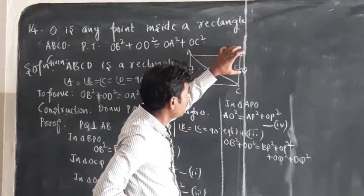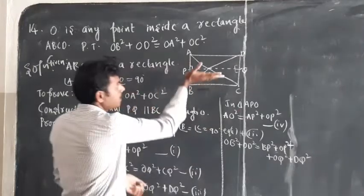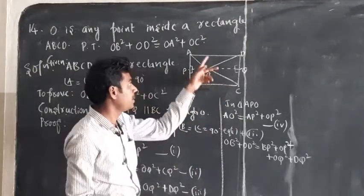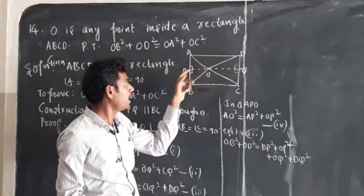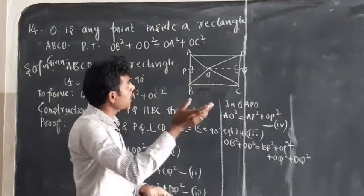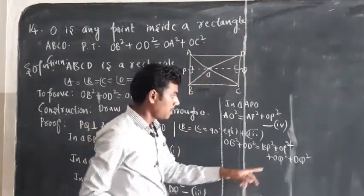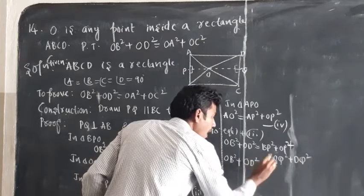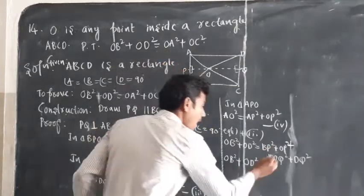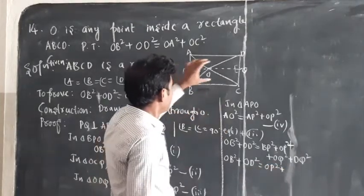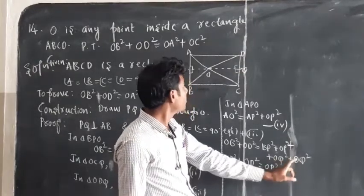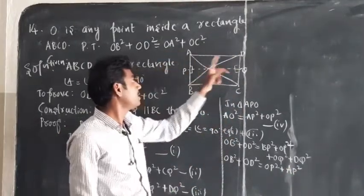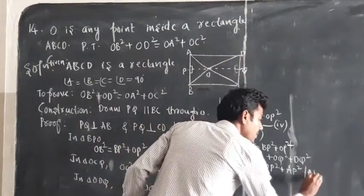Since APQD and BPQC are rectangles, AP equals DQ and BP equals CQ. So DQ square can be replaced by AP square, and BP square can be replaced by CQ square. Therefore OB square plus OD square equals AP square plus OP square plus OQ square plus CQ square, which equals OA square plus OC square.